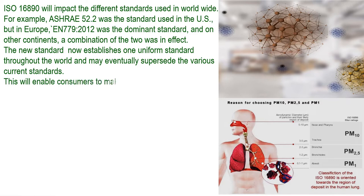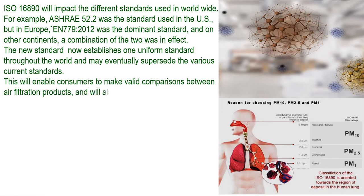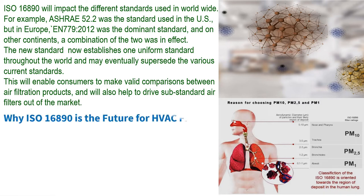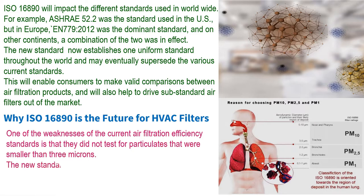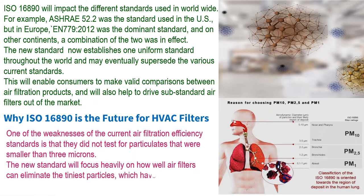This will enable consumers to make valid comparisons between air filtration products and will also help to drive substandard air filters out of the market. Why is ISO 16890 the future for HVAC filters? One of the weaknesses of the current air filtration efficiency standards is that they did not test for particulates smaller than 3 microns. The new standard will focus heavily on how well air filters can eliminate the tiniest particles, which have been identified as the most hazardous to human health.